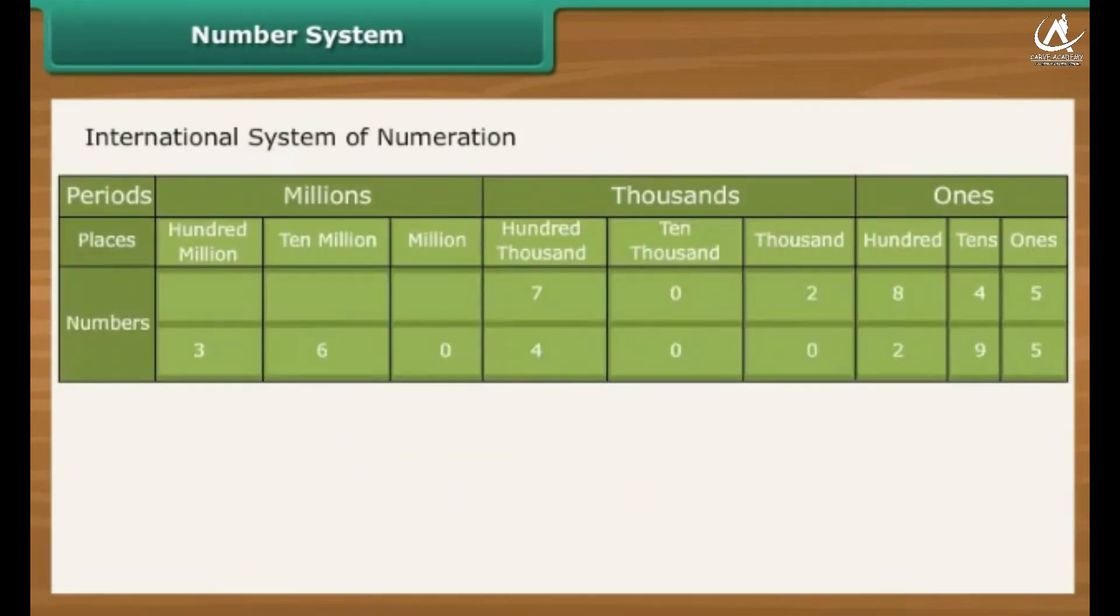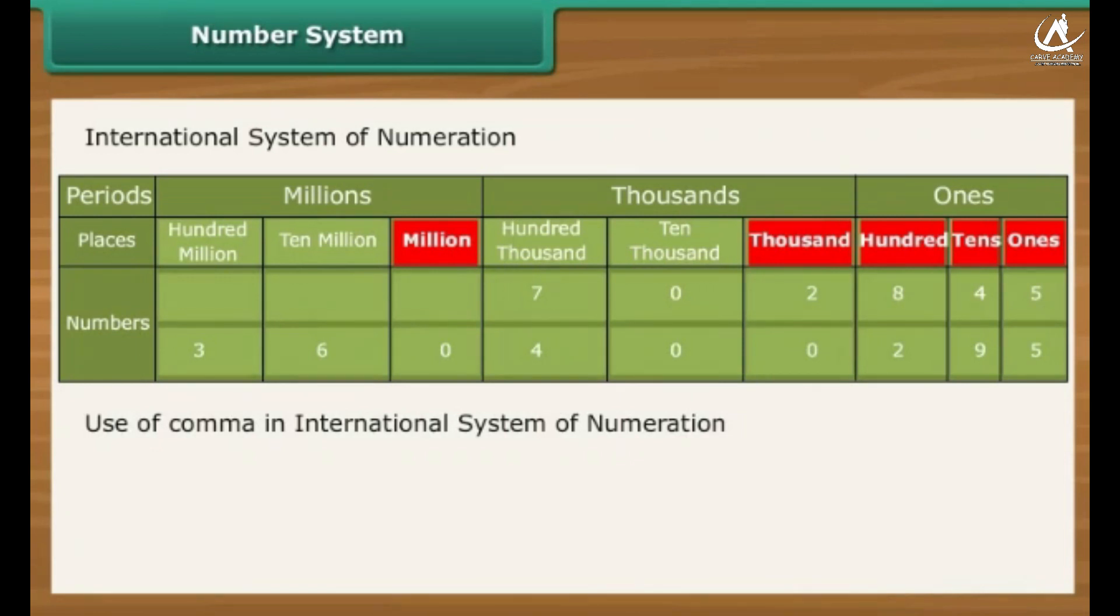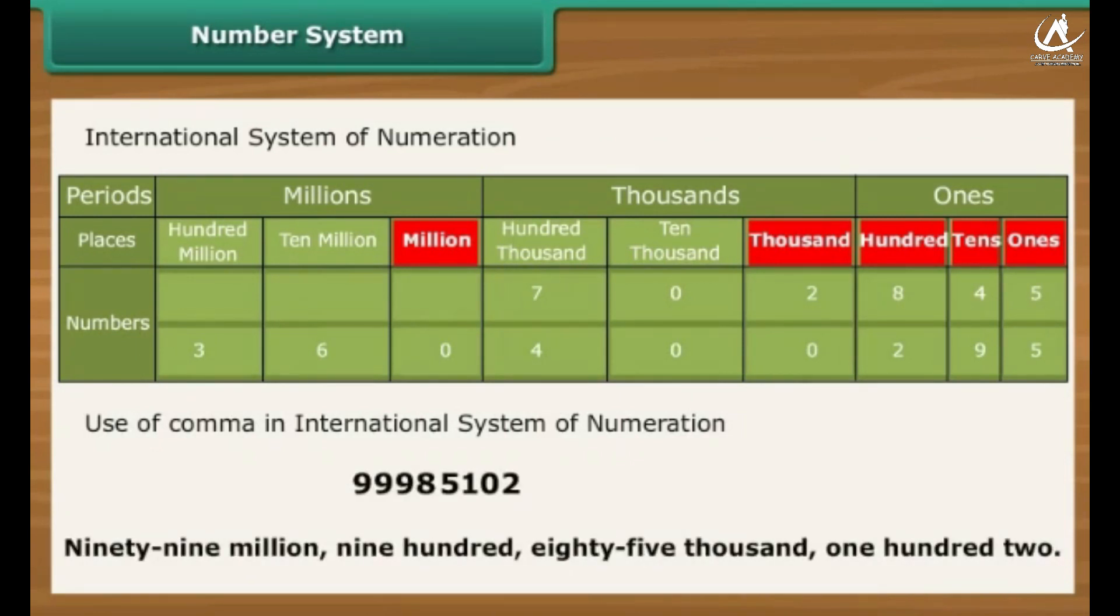In the international system of numeration, as it is being used, we have ones, tens, hundreds, thousands, and then millions. One million is a thousand thousands. Commas are used to mark thousands and millions. It comes after every three digits from the right. The first comma marks thousands and the next comma marks millions.